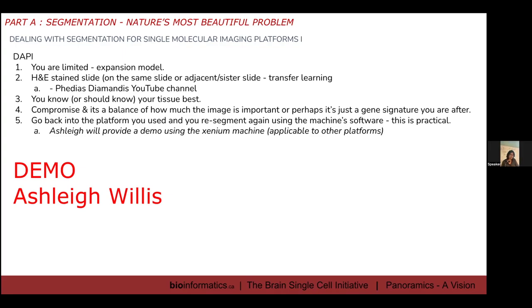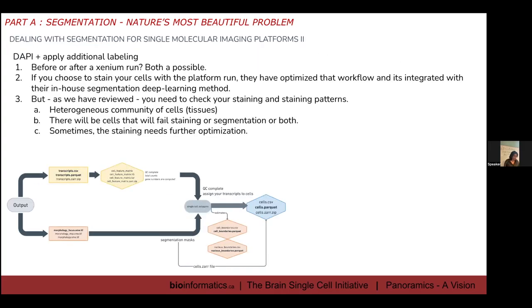Question from audience: For segmentation using immunostaining — for example staining bone marrow where stroma cells are impossible to segment without a marker like NGFR — can you run Xenium, then use NGFR for segmentation with another software, and combine that segmentation with the transcriptomics? Yes, you can. If you do the staining during a Xenium run, it will segment for you. If you do it after the Xenium run and stain yourself, you have to run something like CellPose or Mesmer yourself and then register the results together. It's possible.